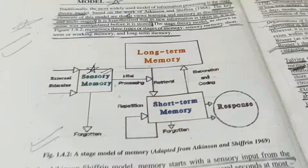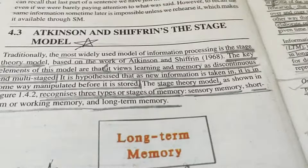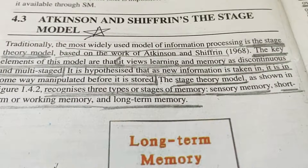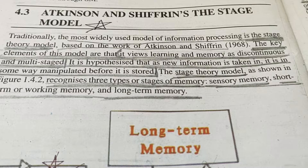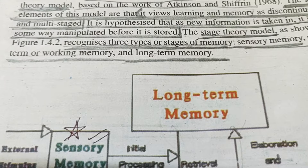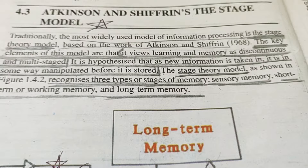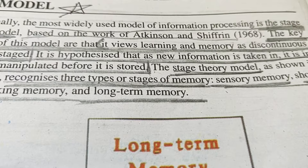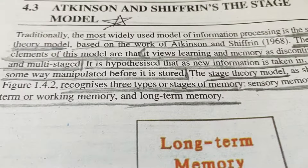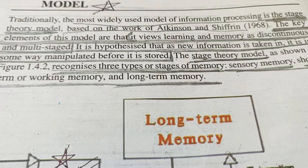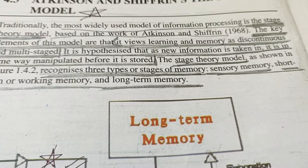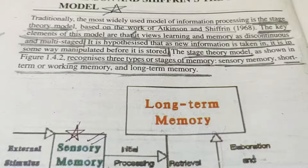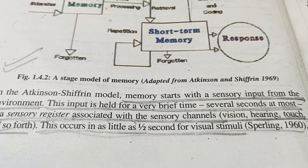Coming to detail — I told you this diagram so you have a rough estimation of the theory. Now starting from the beginning: Stage Theory talks about stages. There are three types of stages — sensory memory, short-term or working memory, and long-term memory. These are the three stages of information. This model tells us that learning and memory is discontinuous and multi-staged — it is not a continuous process, but passes through these three distinct stages.